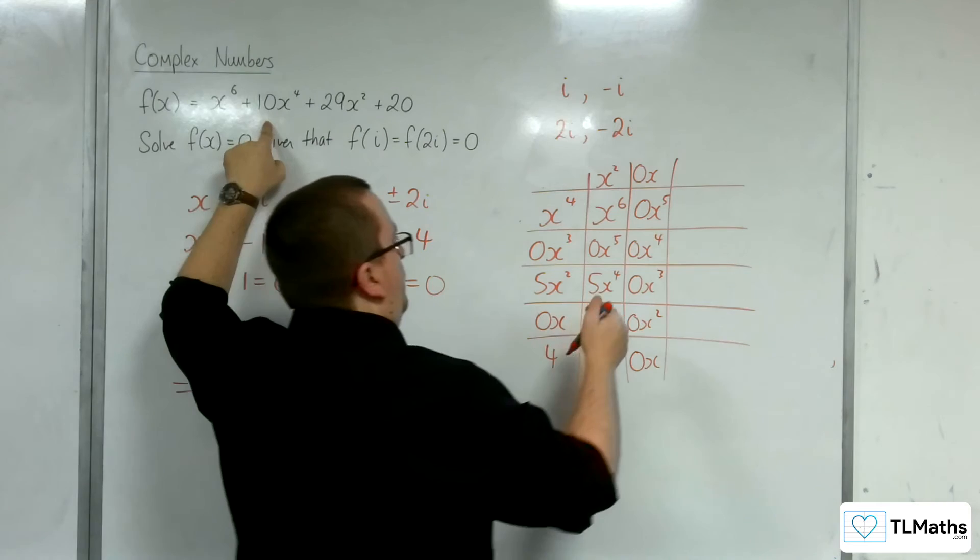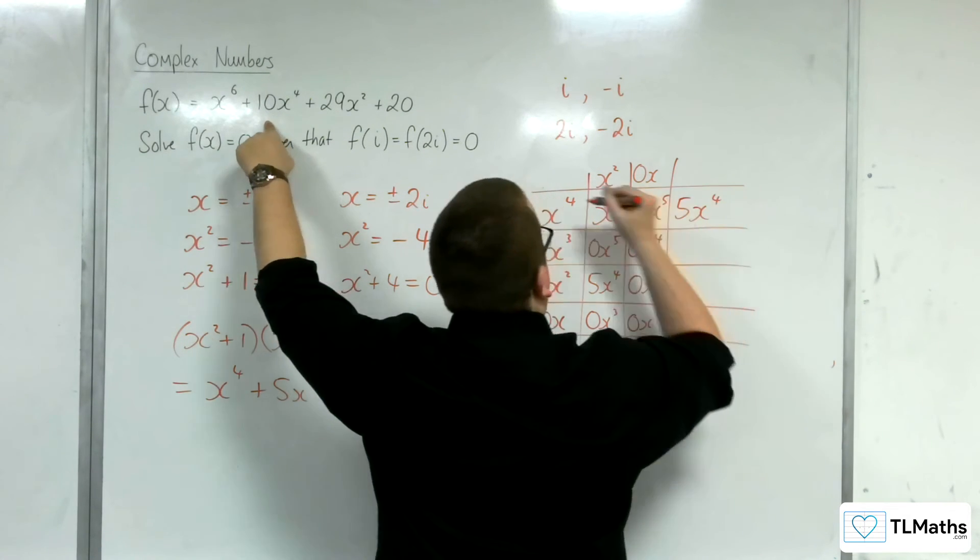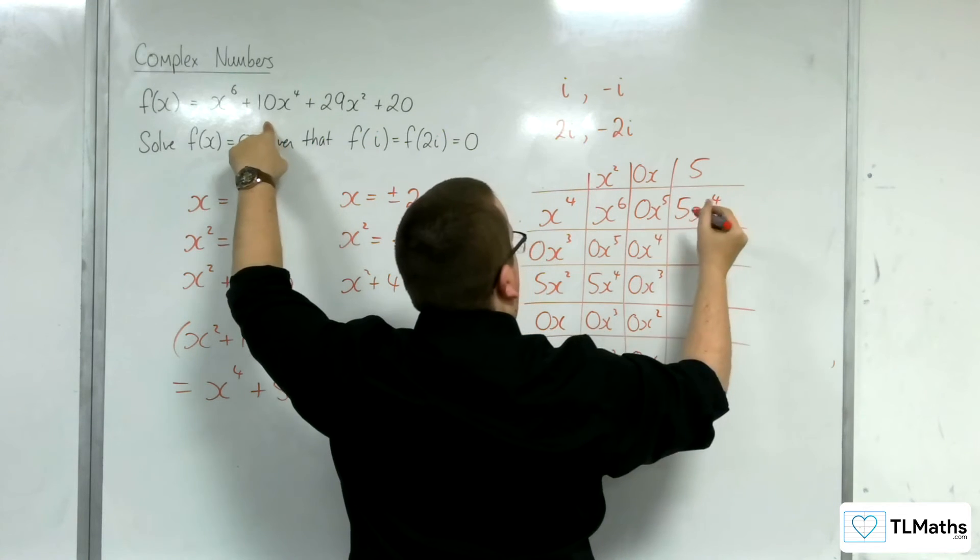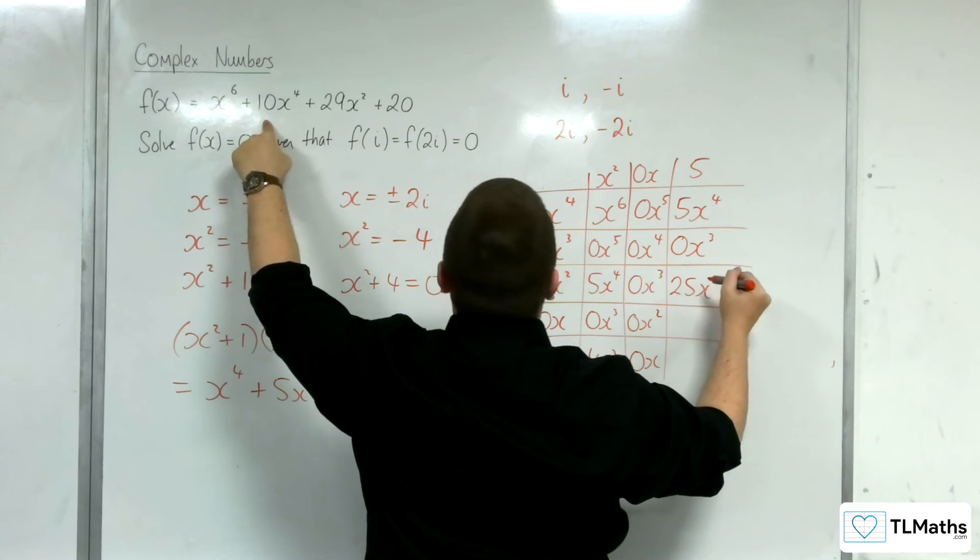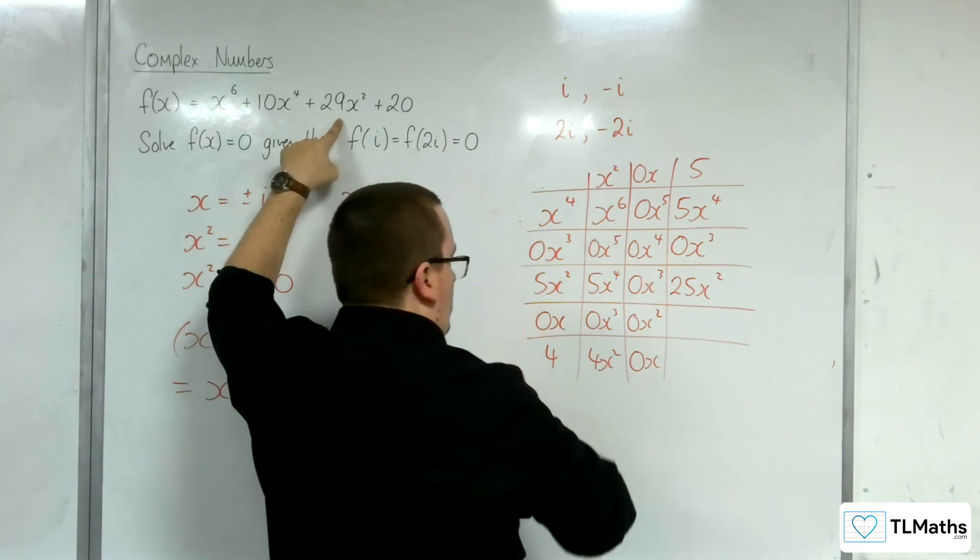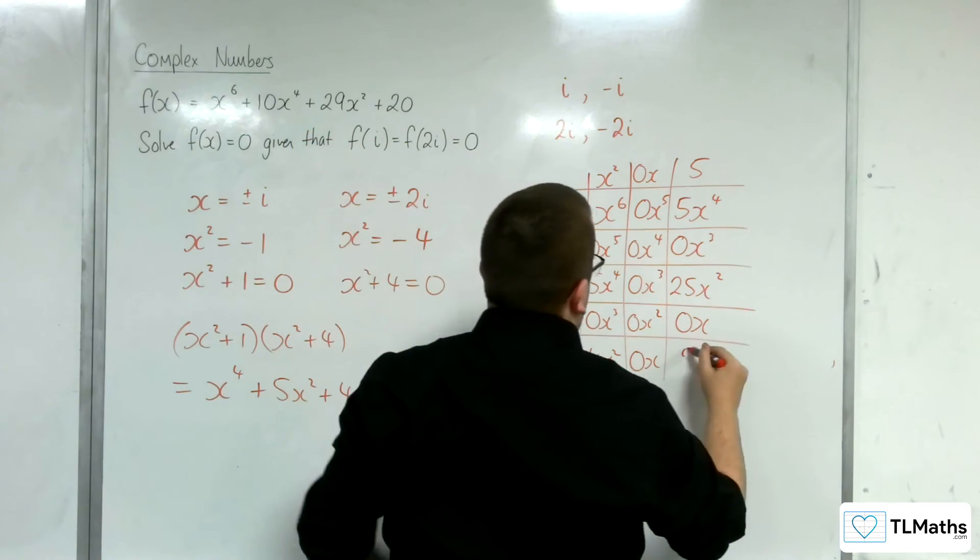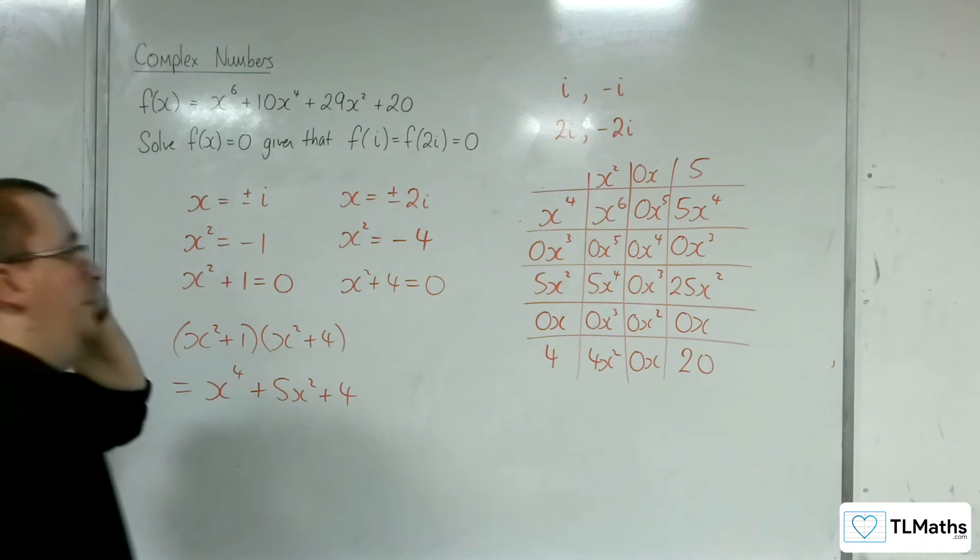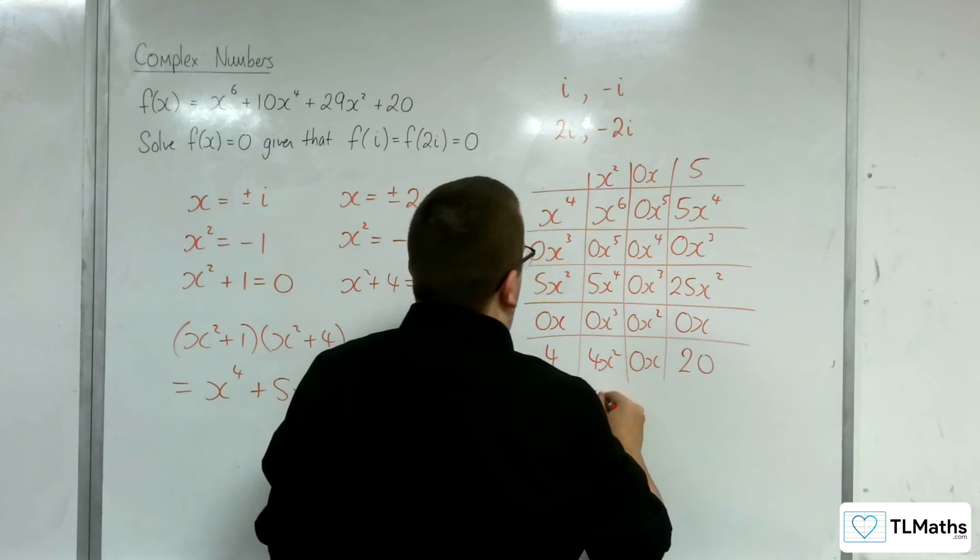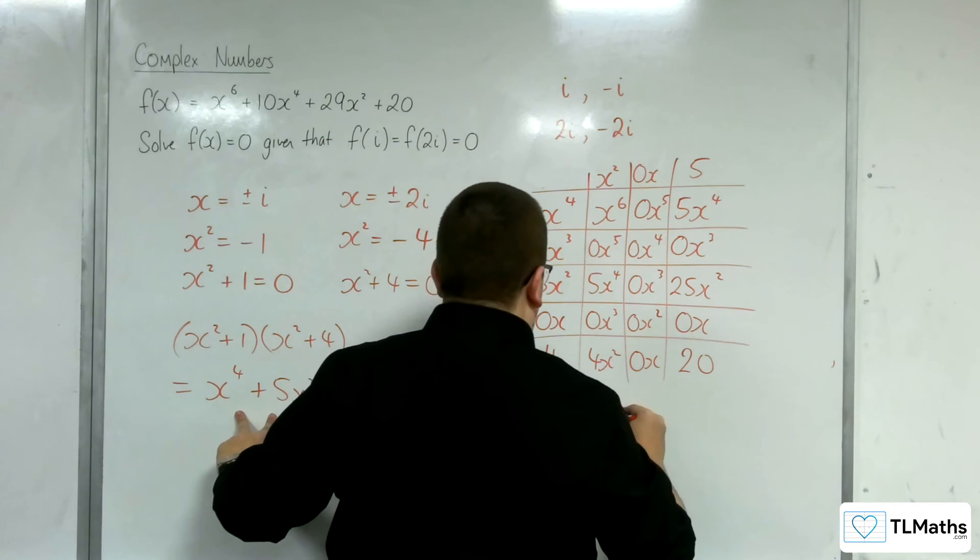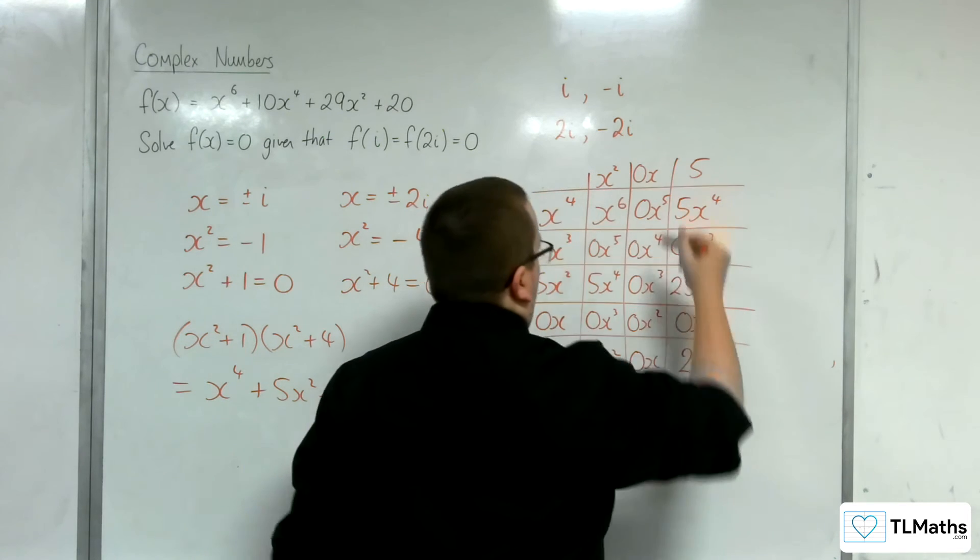Now I need 10x to the 4, so I've got 5 already, so I'm going to need another 5. So I'm going to have 5 there, so I'd have 0x cubed there, I'd get 25x squared, plus the 4x squared makes the 29x squared, so that's all working out. That's 0x and plus 20 on the end. Excellent. So I now know that f of x can be written as the x to the 4 plus 5x squared plus 4 times by this x squared plus 5.